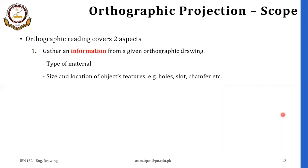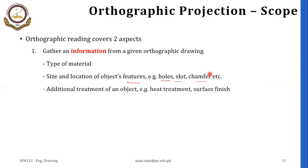The scope of orthographic projection covers two main important aspects. The first one is gathering information from a given orthographic drawing, like the type of material, size and location of object features such as a hole, slot, chamfer, etc., and some additional treatment of the object like heat treatment, surface finishing, and so on.